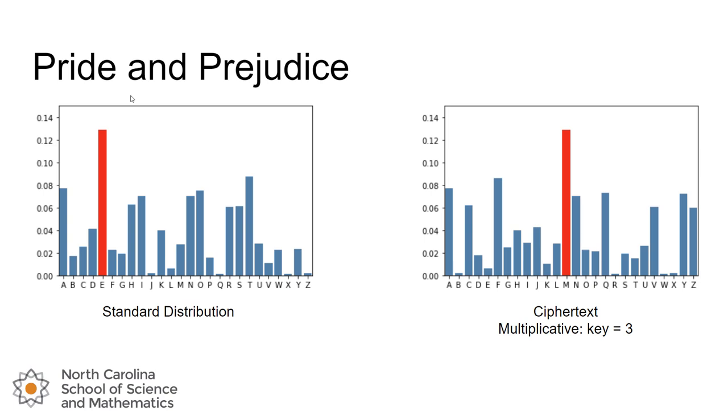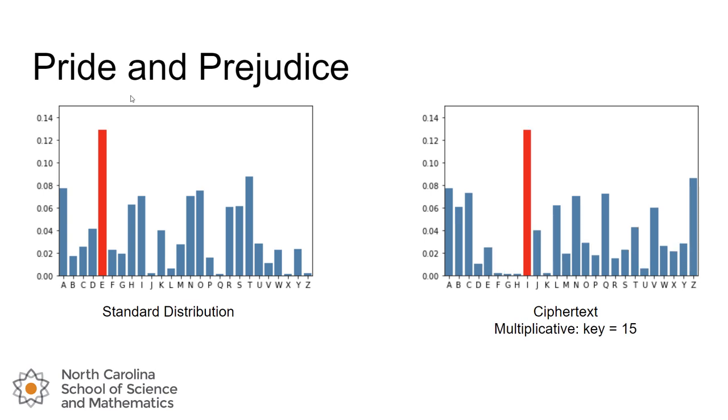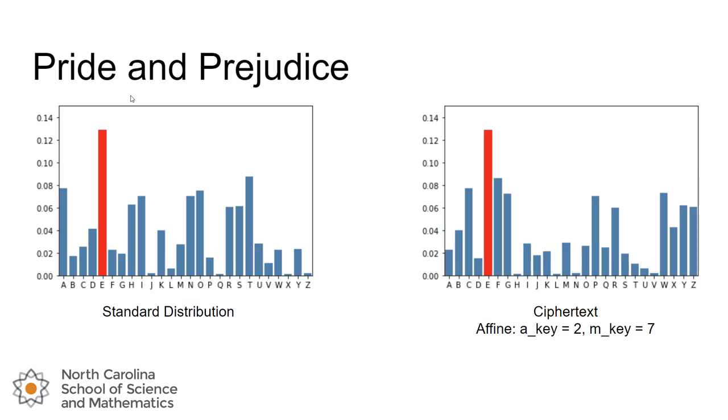It turns out this actually is enough for us to figure out that the key is 3. We'll talk more about that in a future lesson. But it does get even harder when we start looking at affine ciphers. Here's a ciphertext that was created using affine with an additive key of 2 and a multiplicative key of 7.